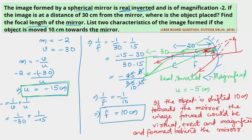So to summarize: the object is placed at 15 cm from the mirror, the focal length of the mirror is 10 cm, and if the object is shifted 10 cm towards the mirror, the image formed is virtual, erect, and magnified. I hope you have understood this. Thanks for watching.